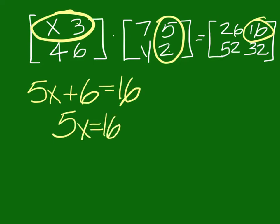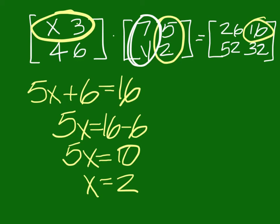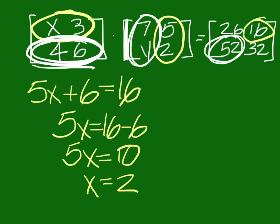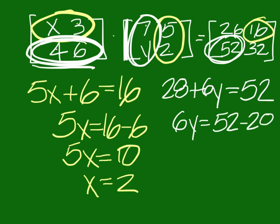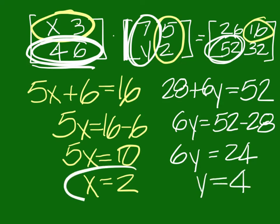So 5X equals 16 minus 6. That'll be 10. X should be 2. Any questions on how we came up with X? Alright. Well, I'm looking for Y now and Y is right here. So I have to use that column and I'll use this second row here in the first matrix. If I'm using this and this, what does it pertain to in the last one? 52, yes. So I would do 4 times 7 to get 28 and then 6 times Y and set it equal to 52. So that's 6Y equals 52 minus 28 which would be 24. Y would end up being 4. So I have 2 and 4.